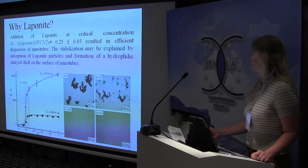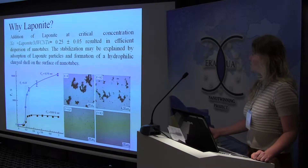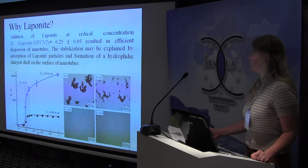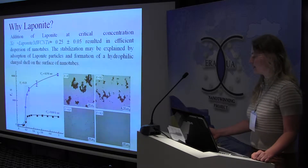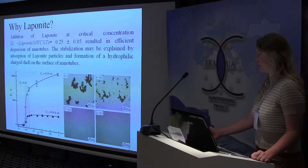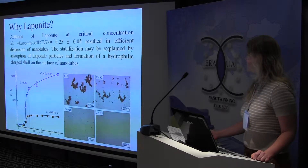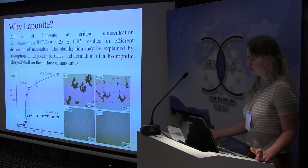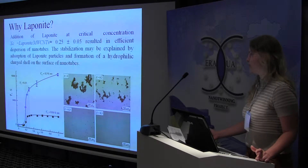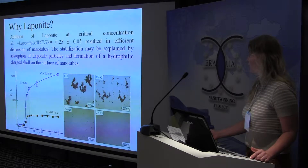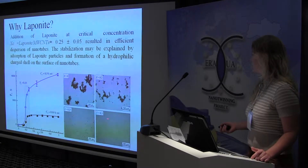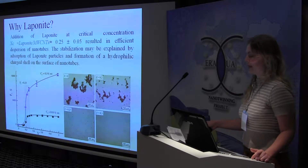The behavior of the suspension at different initial laponite-to-carbon-nanotube ratios was studied by optical microscopy. Large aggregates were observed in the absence of laponite. Between the ratio range of 0.2 and 0.3 mEq aggregates were noticeably smaller, and above 0.3 mEq they were visually absent.